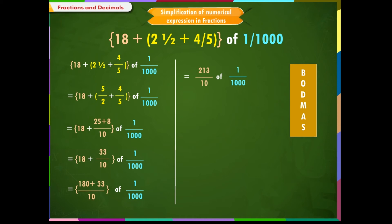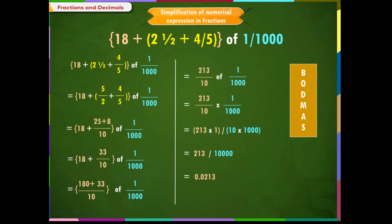Step 4: Since we have solved all the bracket terms, the next step as per BODMAS rule is to solve 'of'. Thus we get 213/10 multiplied by 1/1000 equals 213 into 1 by 10 into 1000, equal to 213/10,000. Step 6: When we divide by 10,000 we move the decimal 4 places to the left. Therefore the answer is 0.0213.